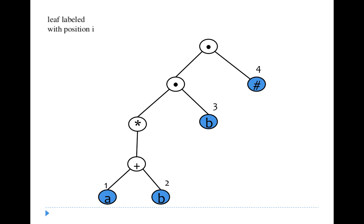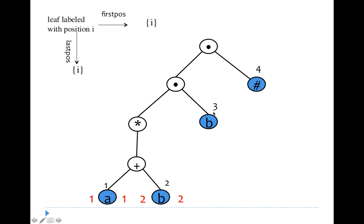The first position and last position of a leaf node labeled with i is the label itself, i. Hence for the node labeled 1, firstpos = {1} and lastpos = {1}. For node 2, firstpos = {2} and lastpos = {2}. For node 3, firstpos = {3} and lastpos = {3}. For node 4, firstpos = {4} and lastpos = {4}. We have now computed first and last position for all leaf nodes.